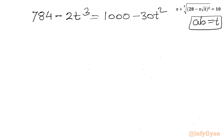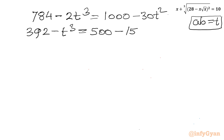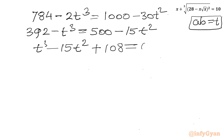Dividing the entire equation by 2 gives 392 minus t³ equal to 500 minus 15t². Taking all terms to one side, we get t³ minus 15t² plus 108 equal to 0.